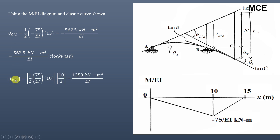Next, we find the vertical deviation of the tangent at B with respect to the tangent at A, t_ba, using the second term. We take the area of the M/EI diagram between A and B — a triangle from 0 to 10 m with area 1/2 × (75/EI) × 10 — and find its moment about point B. The centroid of this triangle from point B is 10/3 meters, so t_ba = 1250/EI.